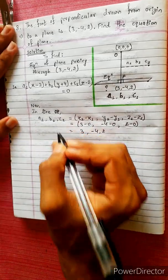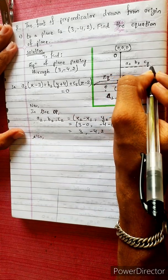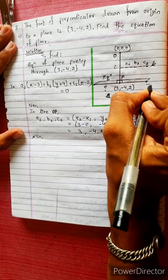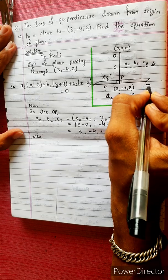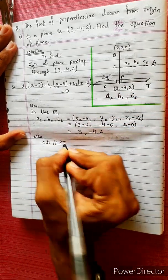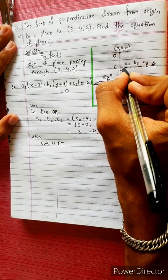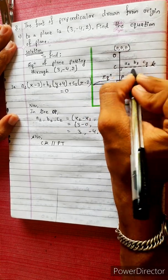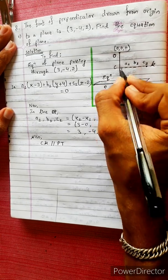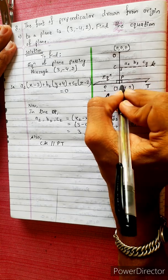Also, A2, B2, C2 — this direction is called the normal line, also called PK or PT. CK is parallel to PT because OP is perpendicular to the plane, so OP is called the normal line.